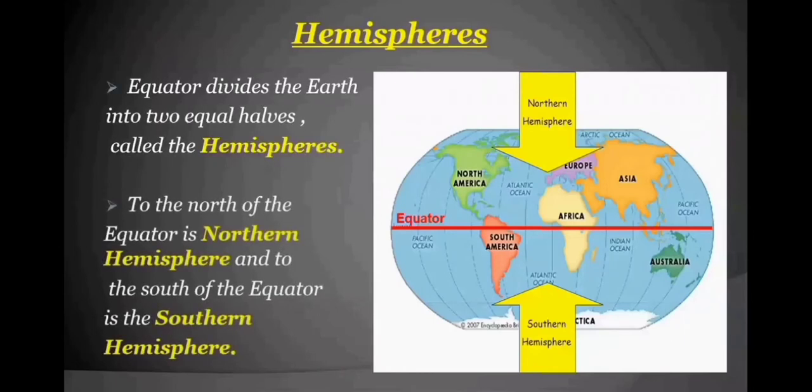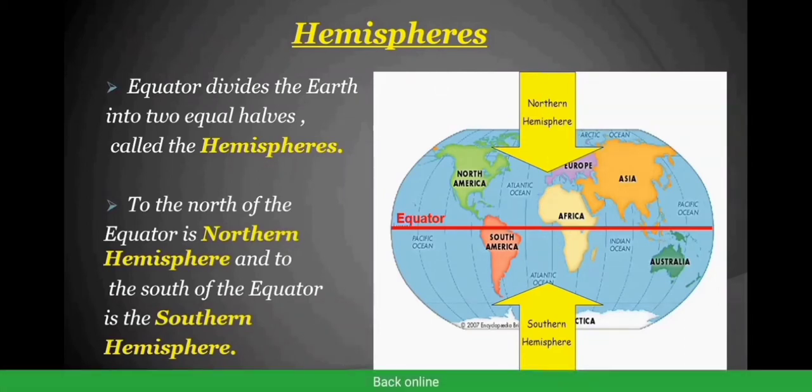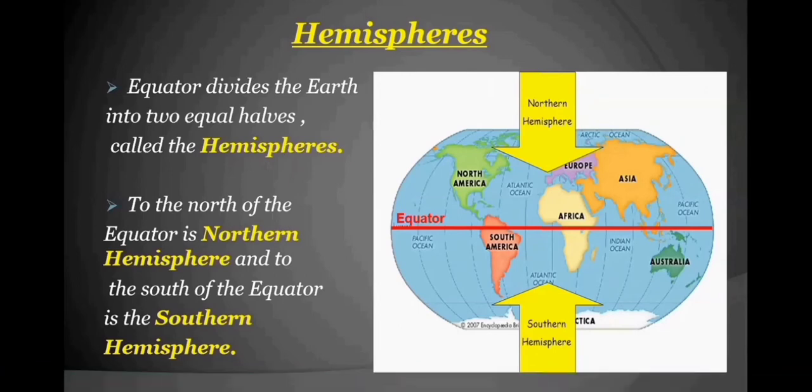This equator divides the earth into two equal halves that are called hemispheres. To the north it is the northern hemisphere. To the south it is the southern hemisphere.